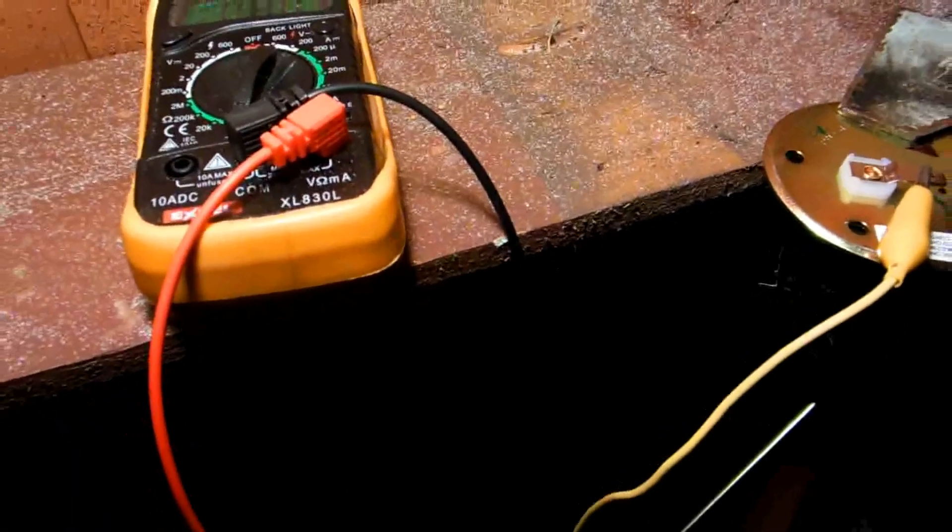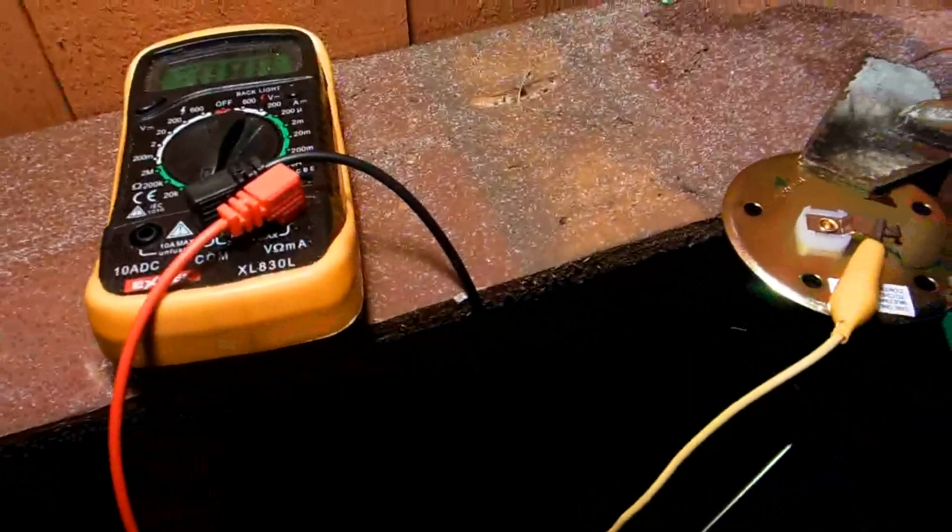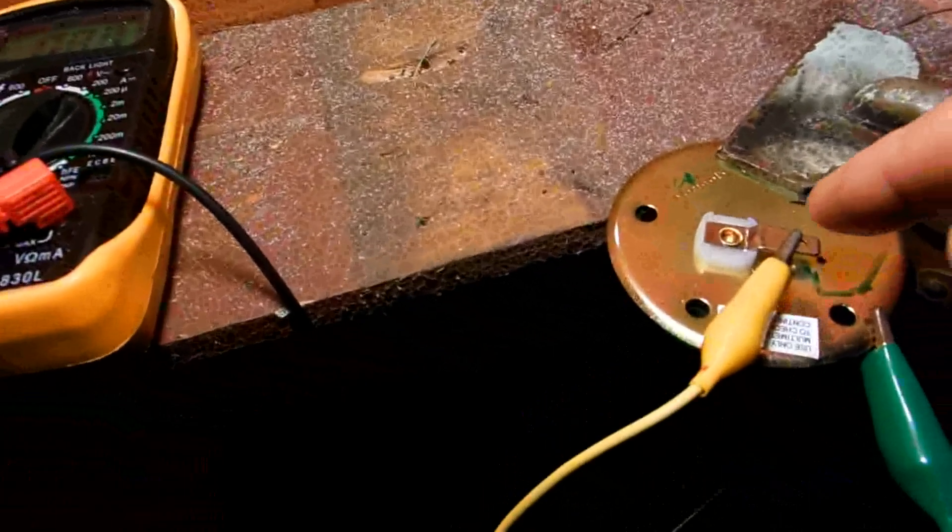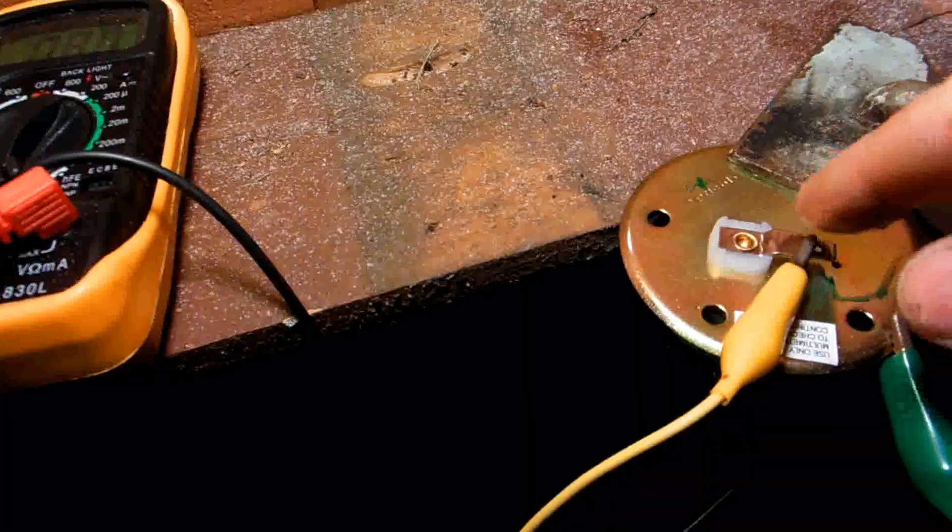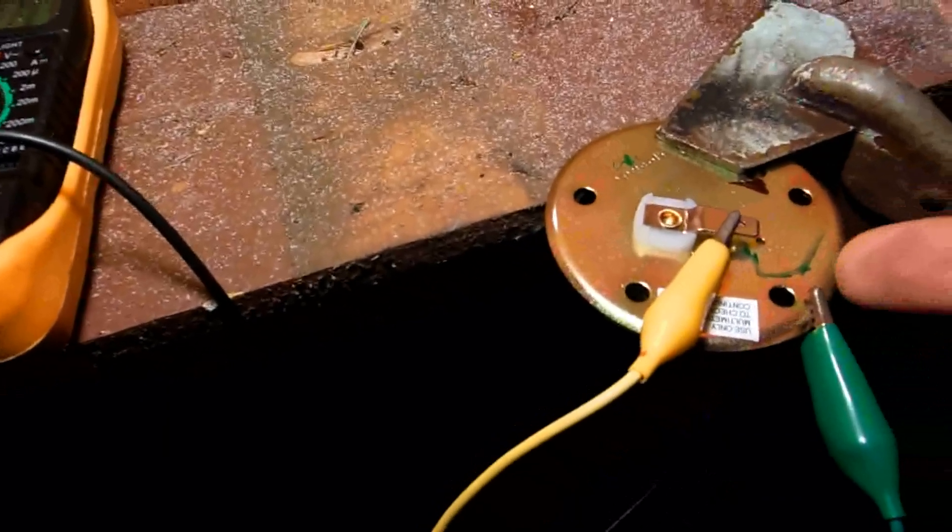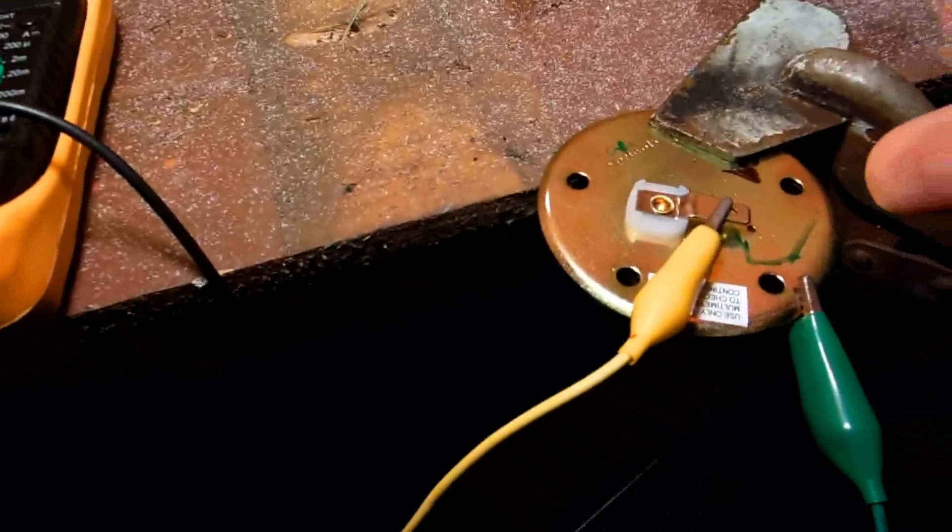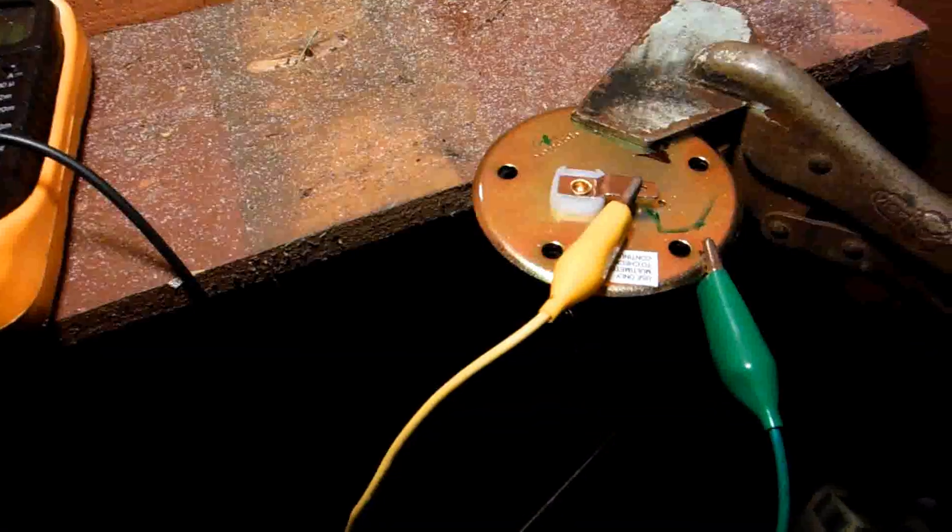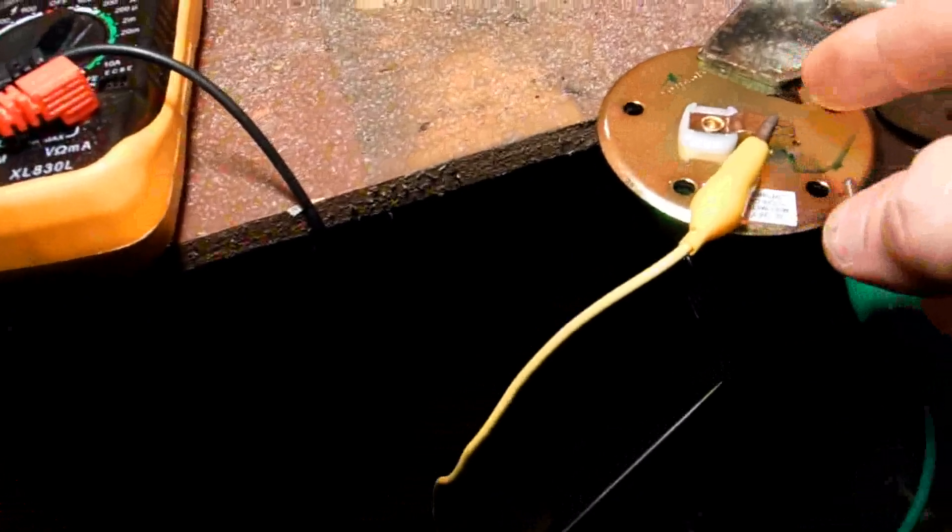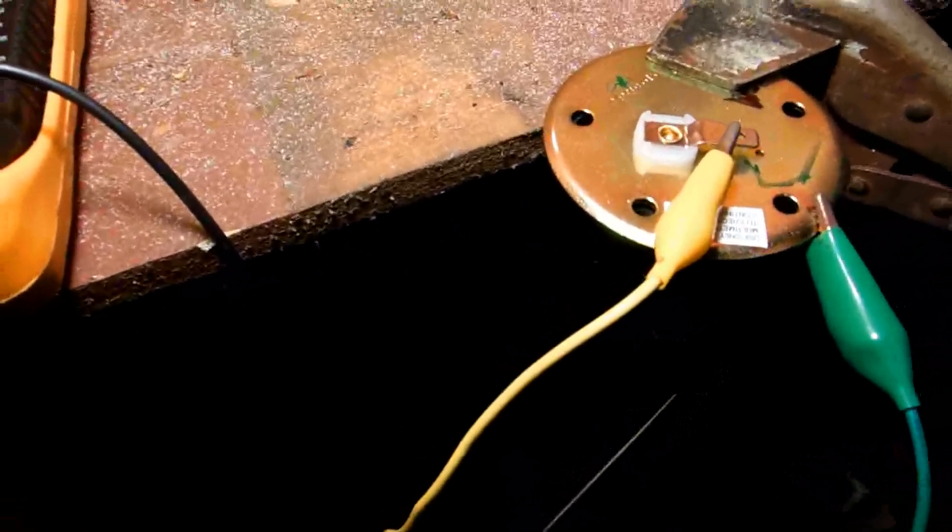If you have a gas gauge that says E and you put gas in it, why does it not work? This will tell you if it's the gauge itself or the float assembly. Notice on this float assembly I have one wire hooked up to where the wire connects from the fuel gauge, and I have one on the other side to the body - that's the ground.